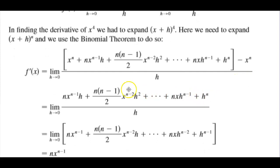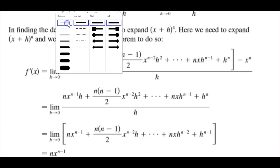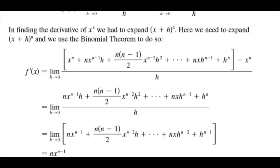Now what happens here is if we take a look at this previous step, we can eliminate this x to the n and this minus x to the n because that becomes 0. And then what's left over is n times x to the n minus 1 times h plus n times n minus 1 over 2 times x to the n minus 2 times h squared plus n times x times h to the n minus 1 plus h to the power of n, all over h.